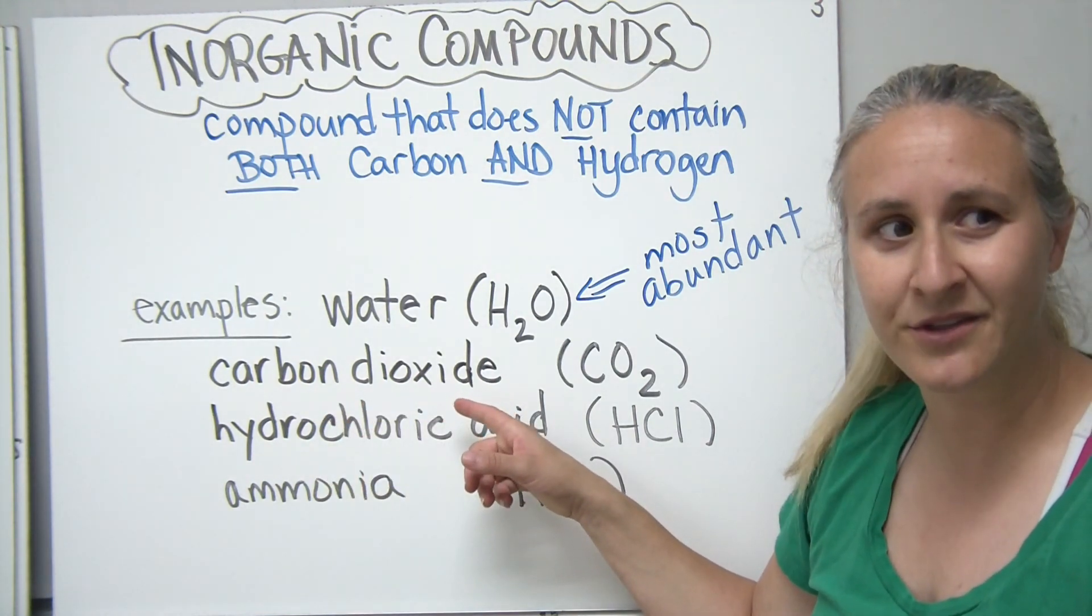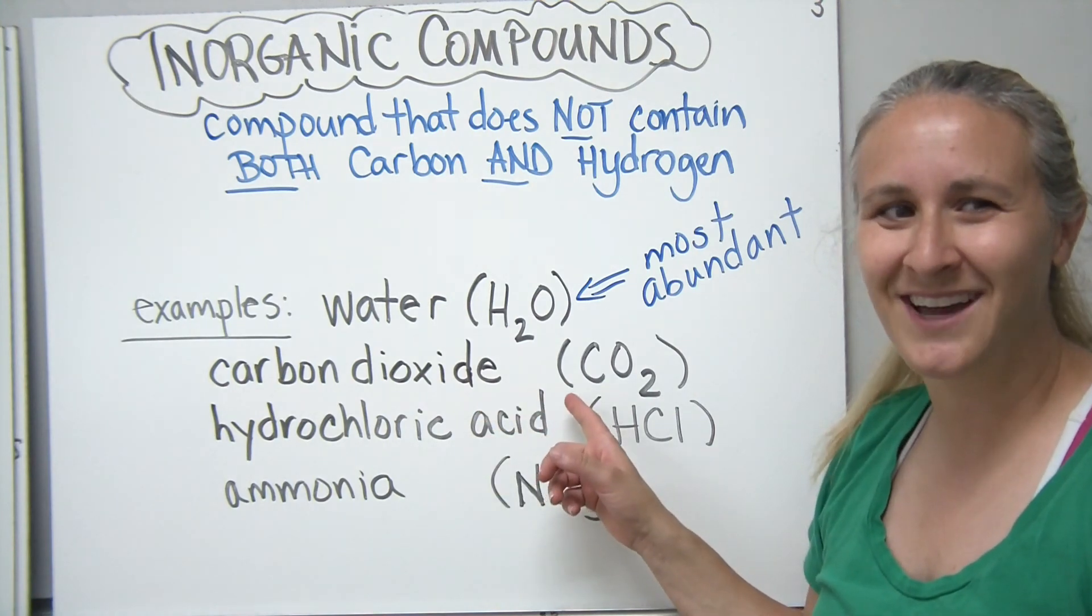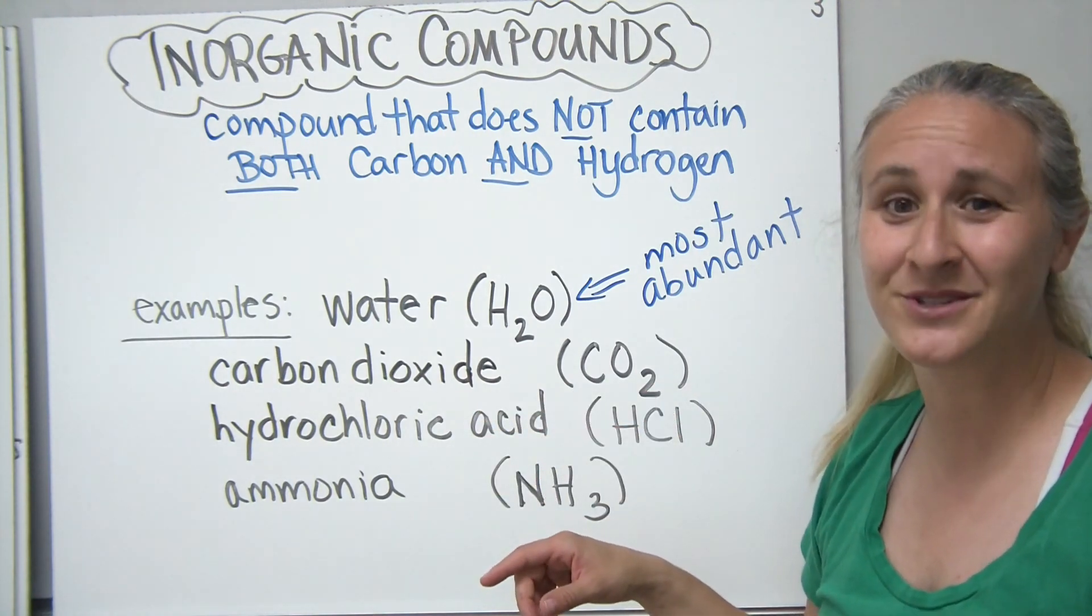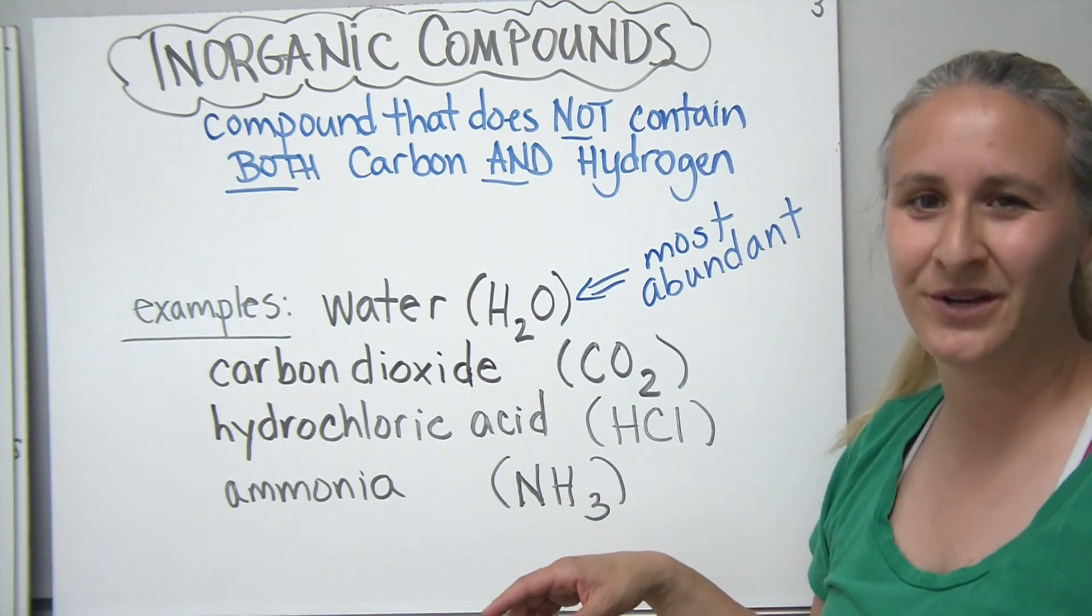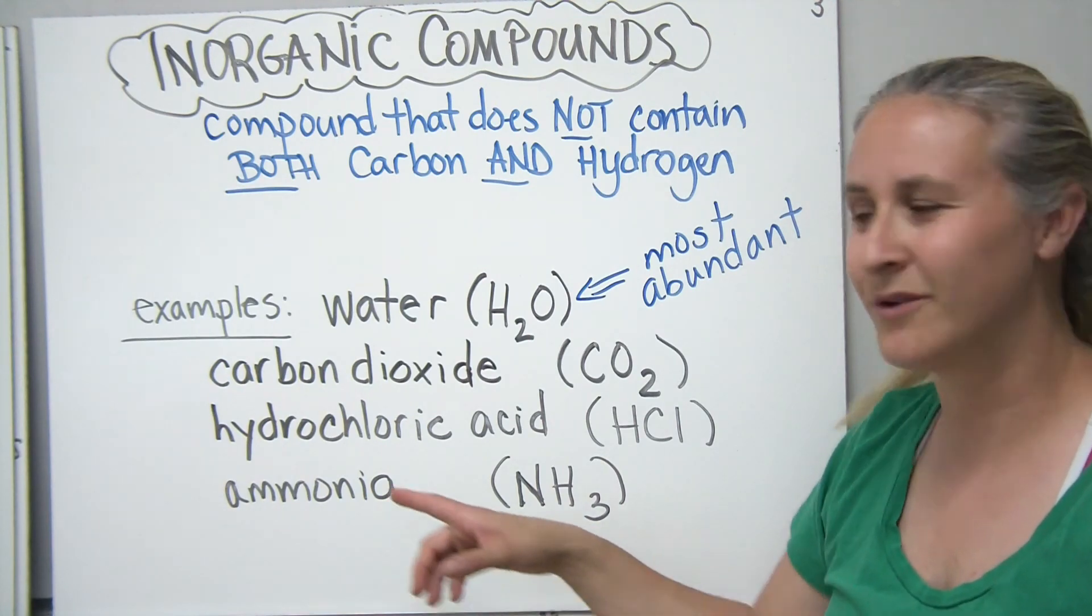Carbon dioxide is another example. Carbon dioxide is carbon and two oxygens bonded together. So we do have the carbon, but we don't have any hydrogen with it. So it's still inorganic.